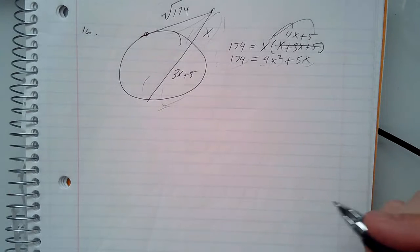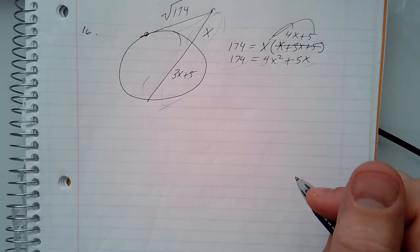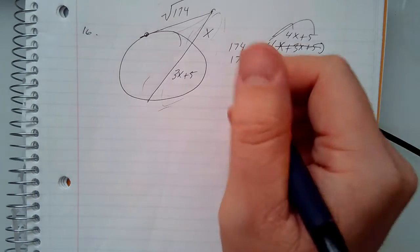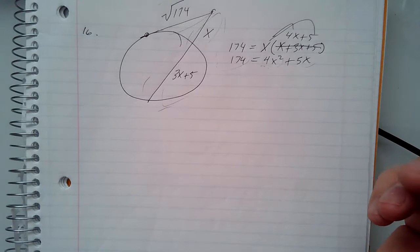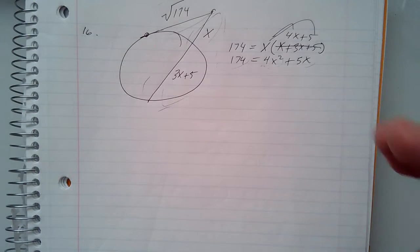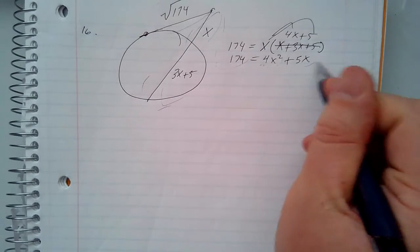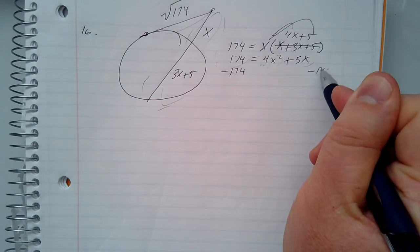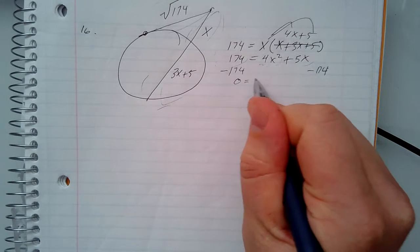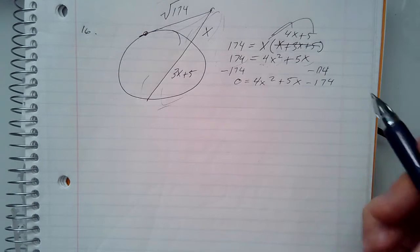I forgot what it was called for a moment — the quadratic formula: x equals negative b plus or minus the square root of b squared minus 4ac, all over 2a. I need to make this equation equal zero, so I subtract 174 from both sides and I get zero equals 4x squared plus 5x minus 174.